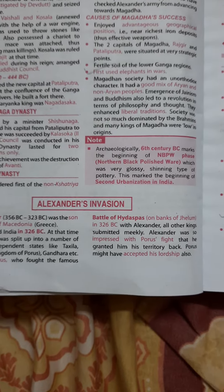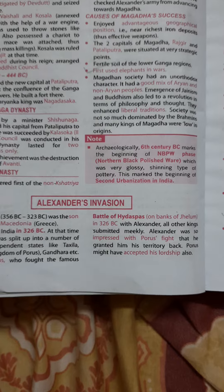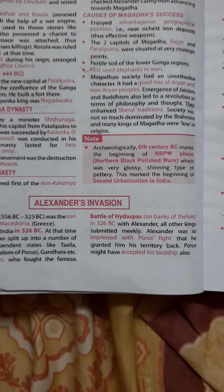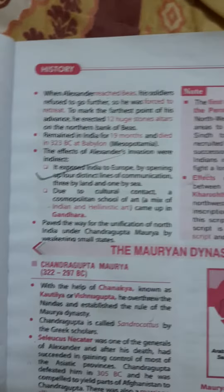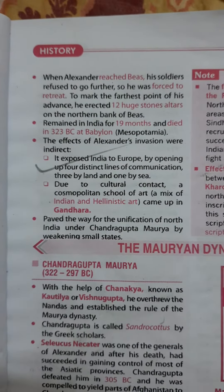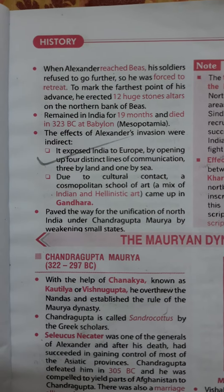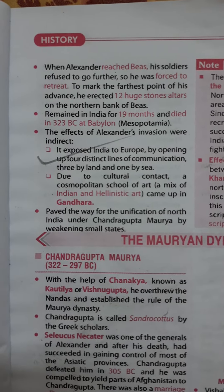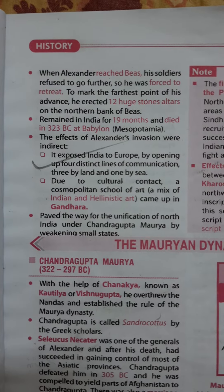Alexander was so impressed with Poros' fight that he granted him his territory back. Poros might have accepted his lordship also. When Alexander reached the Beas river, his soldiers refused to go further, so he was forced to retreat. To mark the furthest point of his advance, he erected 12 huge stone altars on the northern bank of the Beas.